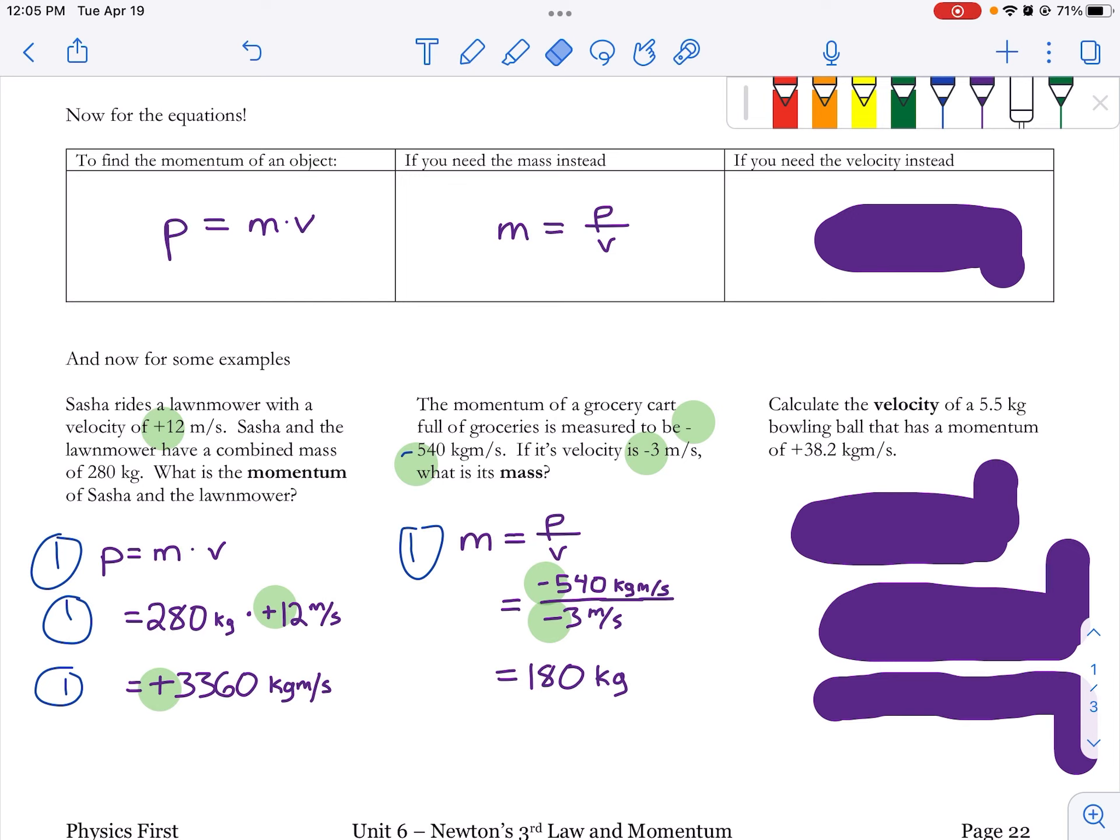So we should have p on top and m on the bottom, which is exactly what's under this purple blob right here. So velocity is going to be p divided by m. Remember, p is for momentum, m is for mass. So that's what we're going to be doing to find the velocity.